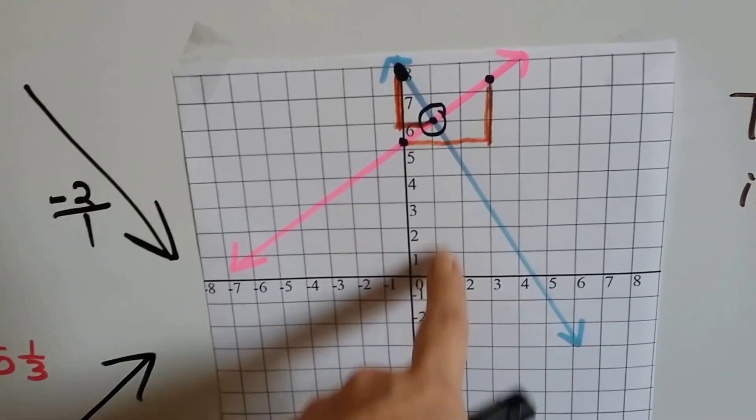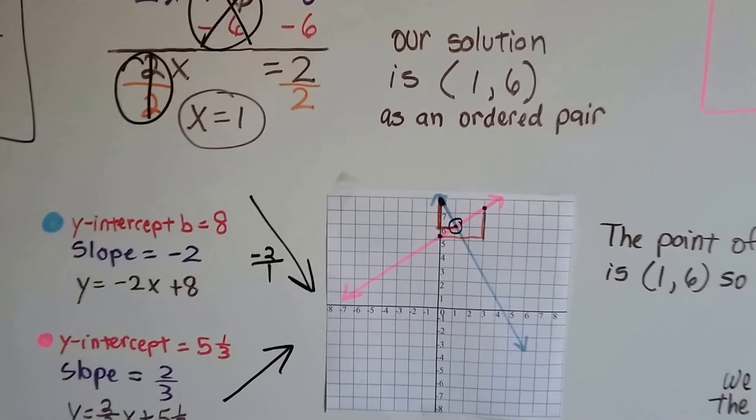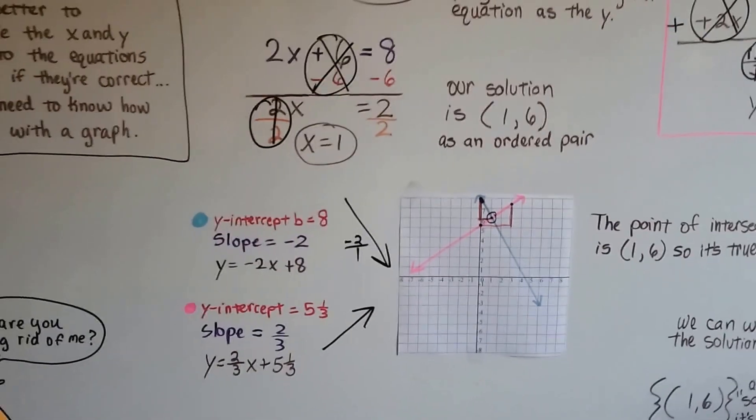And look where they intersected at 1 and 6, just like they were supposed to. So we know we did it correctly. We know it's true.